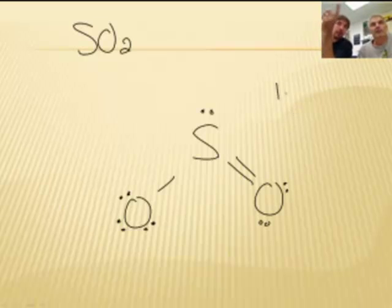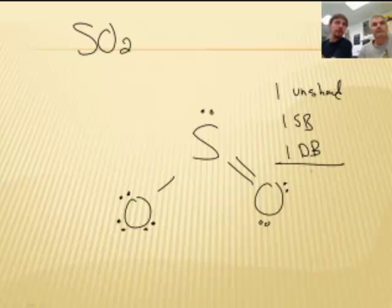How many clouds are on the central atom? I see three clouds. We've got the one unshared pair. One unshared. We have one single bond. One single bond. And we have one double bond. One double bond. And remember, don't count the double bond as two. It's just one cloud, one thing. That's three things.